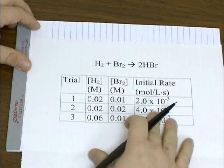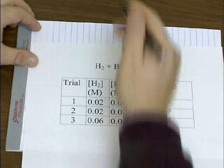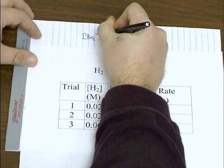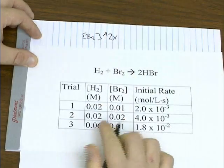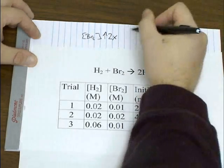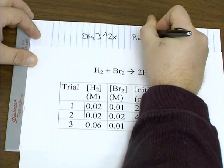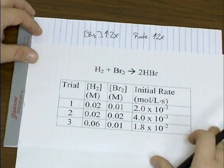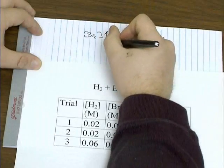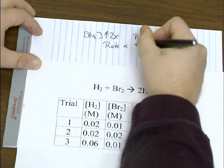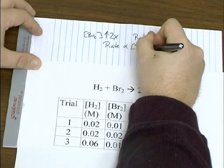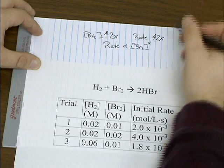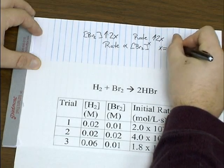So comparing trials one and two, it looks like when you double the concentration of bromine, the result is that the rate also doubles. So if the rate is going to be proportional to the concentration of bromine raised to some exponent X, it looks like X is equal to 1.